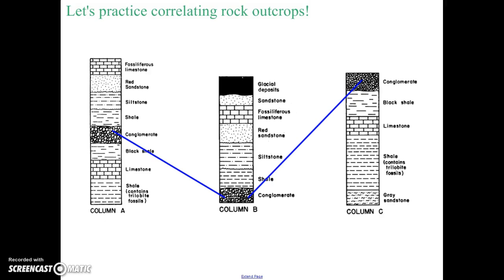Now, anything above them is going to be younger. Anything below them will be older. So there's nothing younger in this column over here, so I'm going to ignore this one for now. Let's focus on these two. In both of them, I see a layer of shale, and then I see siltstone, and then I see red sandstone and fossiliferous limestone. And then I see in the middle column, I see sandstone and glacial deposits. That tells me that out of all the rocks we're looking at, the glacial deposits are the absolute youngest. They would be farthest at the top when we correlate these.